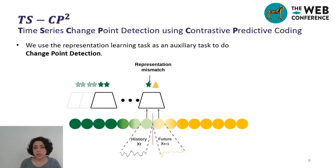So we propose TSCP2 model. We use contrastive learning to learn and predict compact features of the sequences of data. As it is shown in the figure, changepoints occur when there is a mismatch between the features the model and predict based on history and the actual features of future frames. Therefore, we use the representation learning task as an auxiliary task to do changepoint detection.